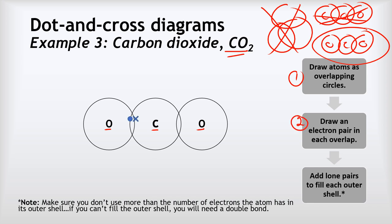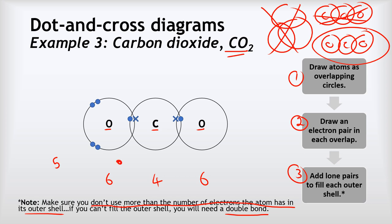Step two — we draw in our electron pairs in each of the overlaps, so two overlaps gives us two electron pairs. Then step three becomes more complicated because of the rule: don't use more than the number of electrons an atom has in its outer shell. Oxygen is group six so it has six electrons in its outer shell; carbon is group four so it's got four electrons. If we start with oxygen and put in two lone pairs, that brings us up to five electrons. Adding another lone pair would give us seven, which would be too many — so we can't do that.